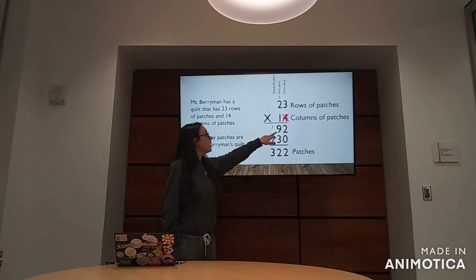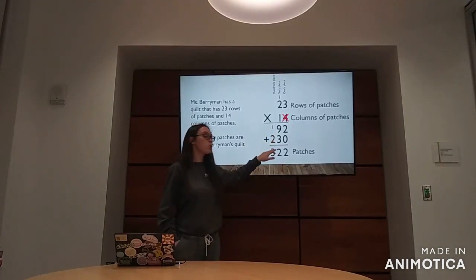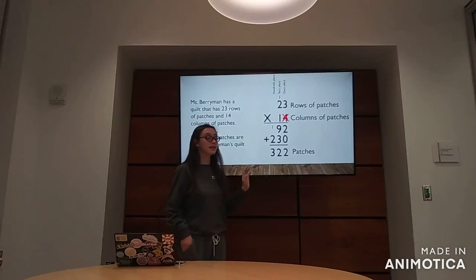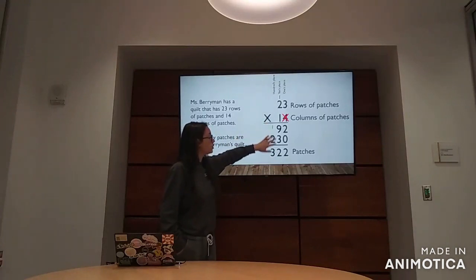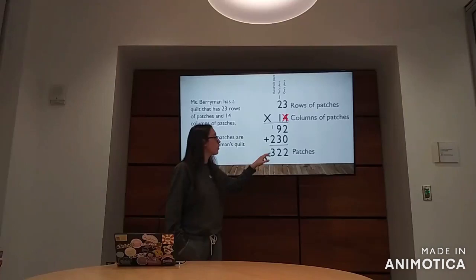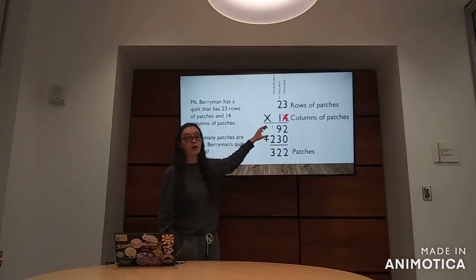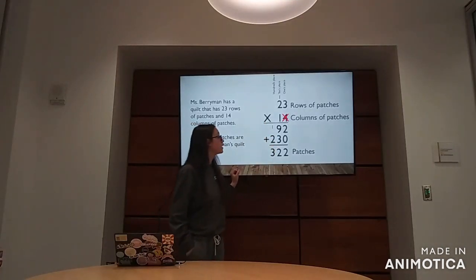So we're going to do 9 plus 3, which is 12. Because 12 is greater than 10 and 10 does not fit in the tens place in this case, we are going to bring down the 2 in the ones place of 9 plus 3, and then we're going to regroup the 10 from the 12 into the hundreds place.